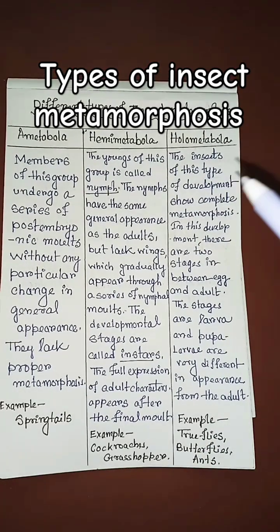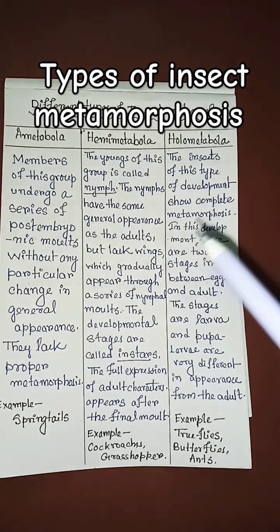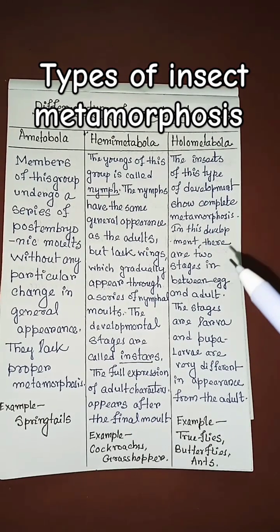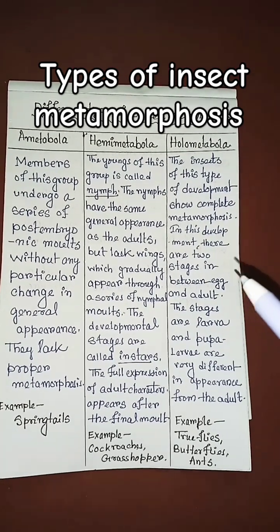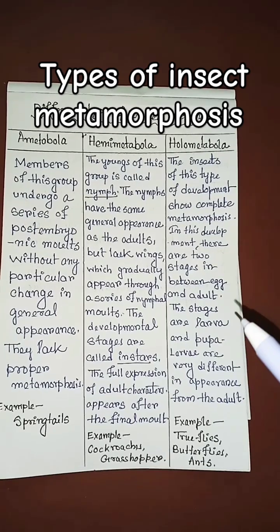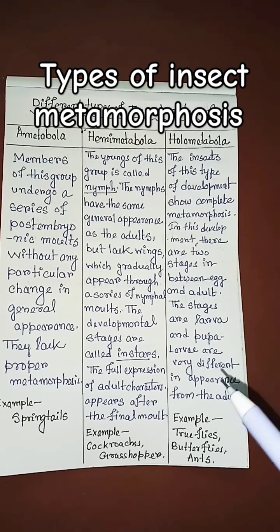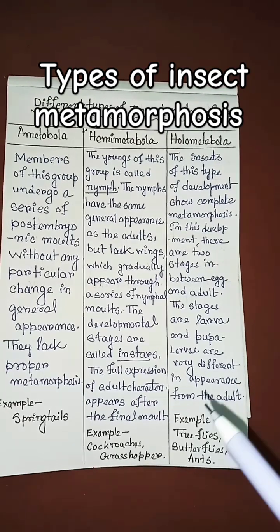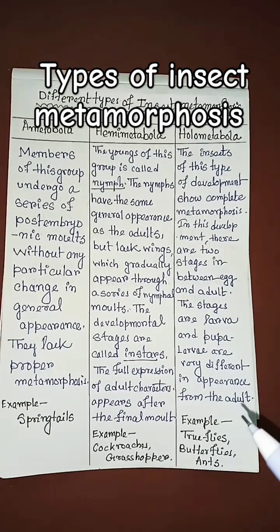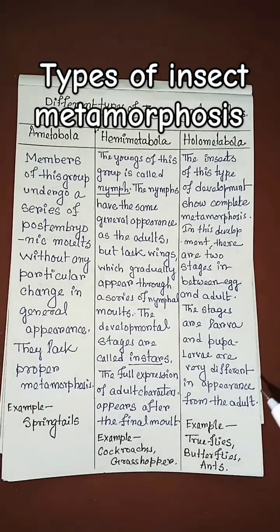Holometabola: insects of this type of development show complete metamorphosis. In this development, there are two stages in between egg and adult. The stages are larva and pupa. The larvae are very different in appearance from the adult. Examples: true flies, butterflies, ants.